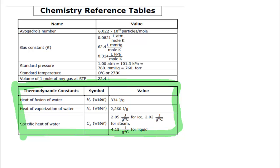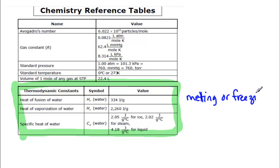Heat of fusion is going to deal with melting or freezing — going from liquid to solid or solid to liquid. And when we're talking about vaporization, we are talking about boiling or condensing, so going from a liquid to a gas or gas to a liquid.